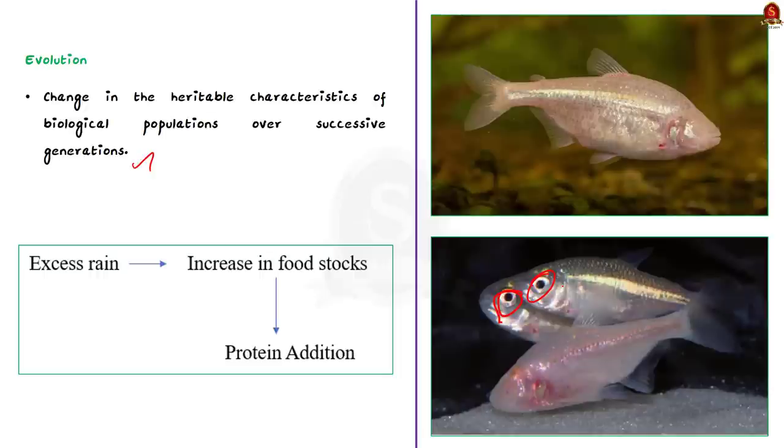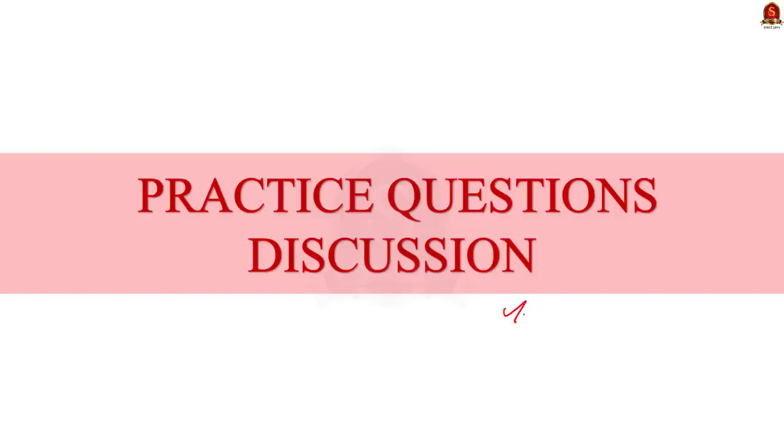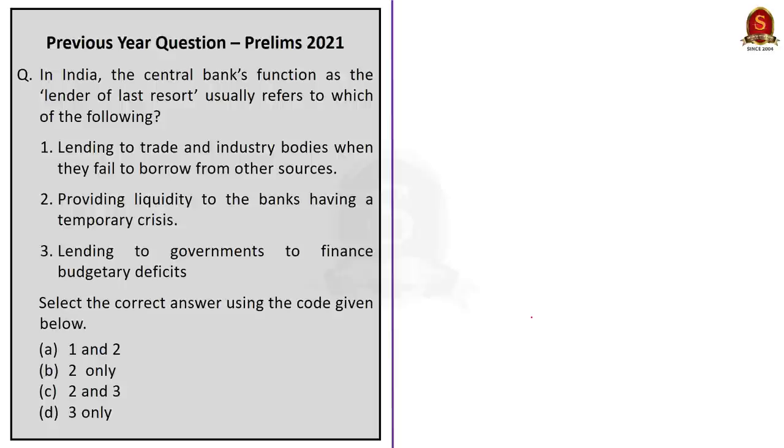With these points in mind, let us move on to the next part of the discussion: practice prelims question discussion. Today we have three prelims questions. I will solve two of them and one is a quiz question for you. Let us take this previous year question which was asked in the year 2021. In India, the central bank's function as the lender of last resort usually refers to which of the following? Statement 1: Lending to trade and industrial bodies when they fail to borrow from other sources. Statement 2: Providing liquidity to the banks having a temporary crisis. Statement 3: Lending to governments to finance budgetary deficits. Select the correct answer using the code given below.